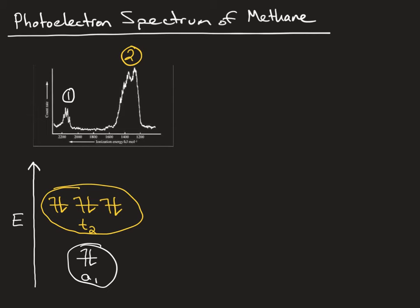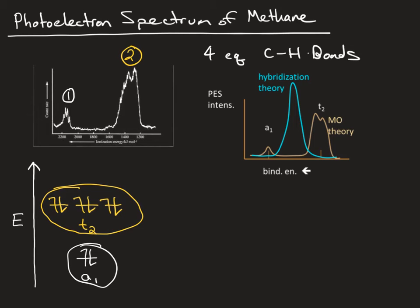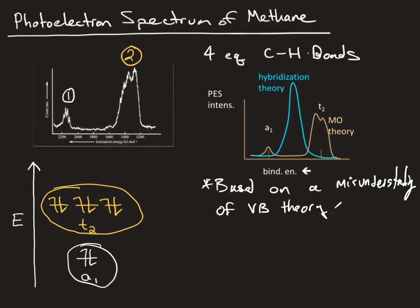It has been stated that one cannot rationalize this viewpoint from the standpoint of four equivalent CH bonds. An incredibly naive and incorrect application of valence bond hybridization theory suggests you should see one peak in the photoelectron spectrum corresponding to an energy roughly between the A1 and T2 transitions predicted by MO theory. However, this is based on a complete misunderstanding of valence bond theory — it's not really even based on valence bond theory, but on a quasi-quantum Lewis picture of bonding in methane.